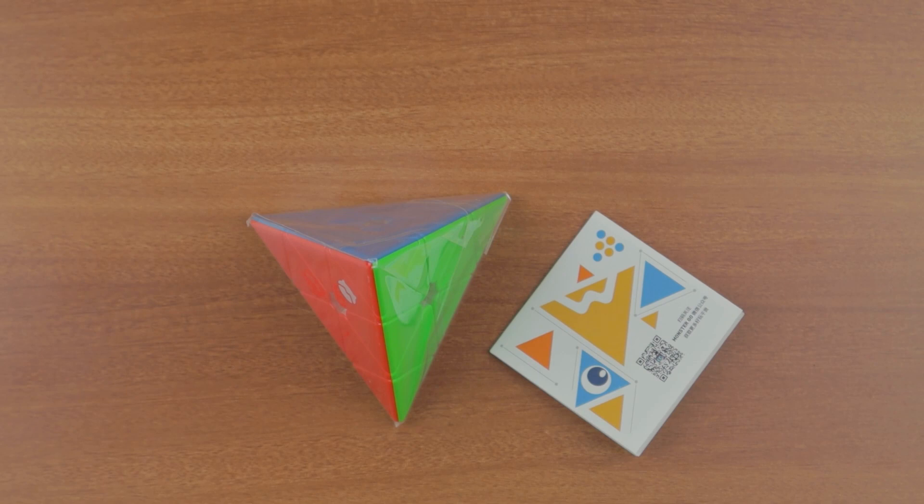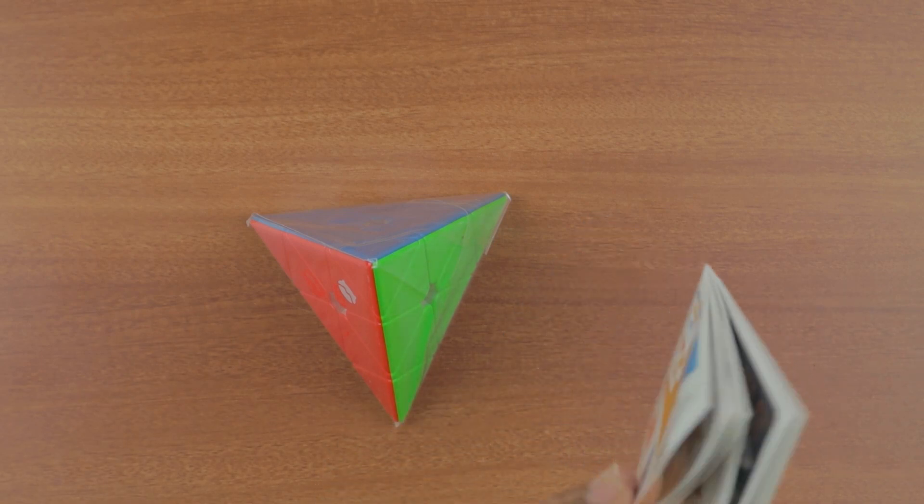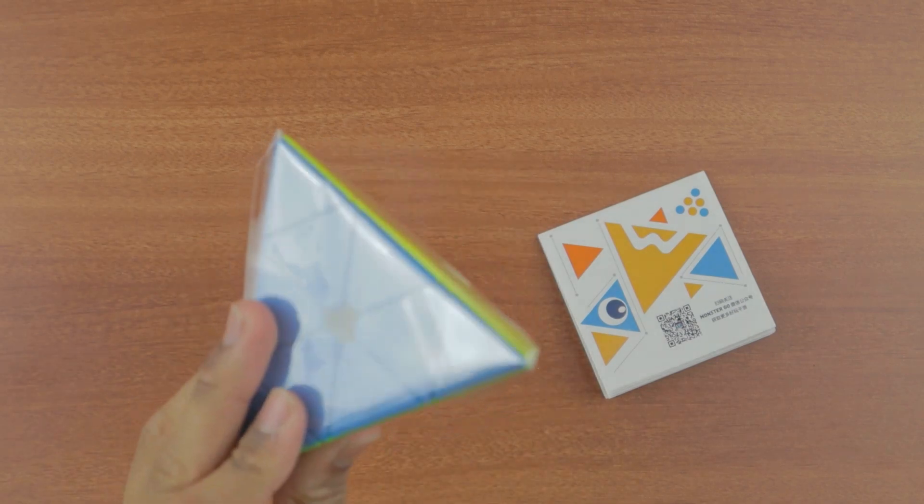So these are the only two things that come in the box: a pamphlet which is presumably containing information to solve the puzzle, and then you also have the puzzle itself.